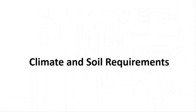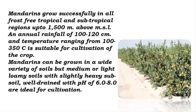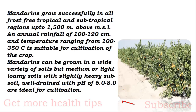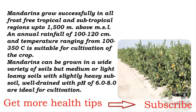Mandarins grow successfully in all frost-free tropical and subtropical regions up to 1500 m above MSL. An annual rainfall of 100 to 120 centimeters and temperature ranging from 10°C to 35°C is suitable for cultivation. Mandarins can be grown in a wide variety of soils, but medium or light loamy soils with slightly heavy subsoil, well drained, with a pH of 6.0 to 8.0 are ideal for cultivation.